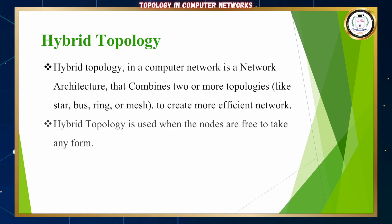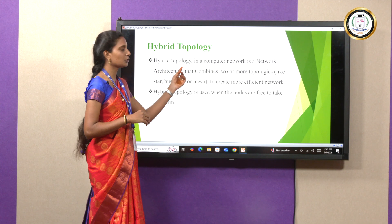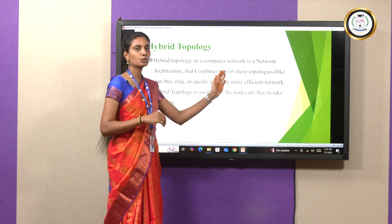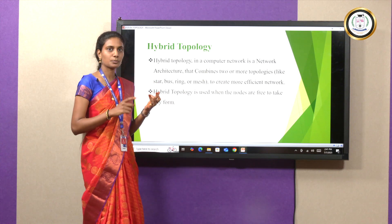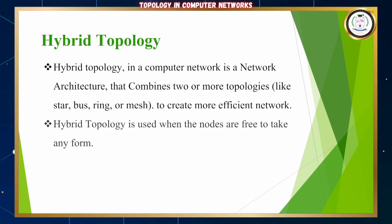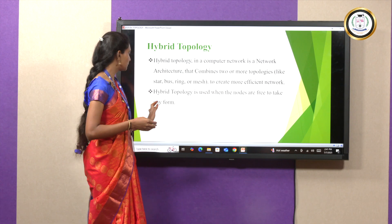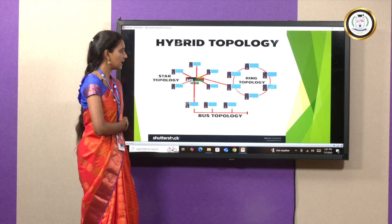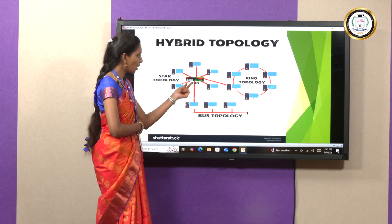The last one is hybrid topology. Hybrid topology in a computer network is a network architecture that combines two or more topologies — like star topology, bus topology, ring topology, etc. — to create a more efficient network. Hybrid topology is used when the nodes are free to take any form. In the diagram, we are using three topologies together: the first one is star topology, where without the central hub we are not able to send messages to other devices.